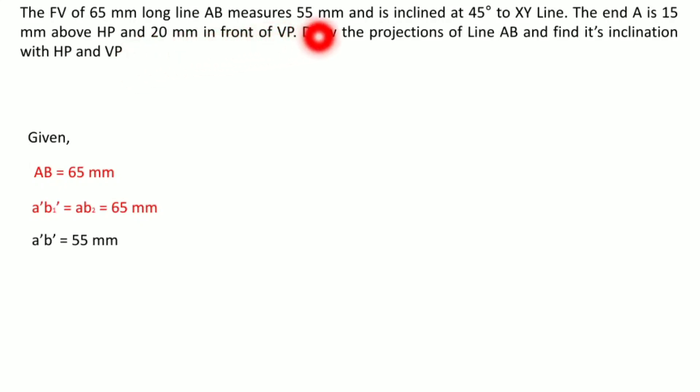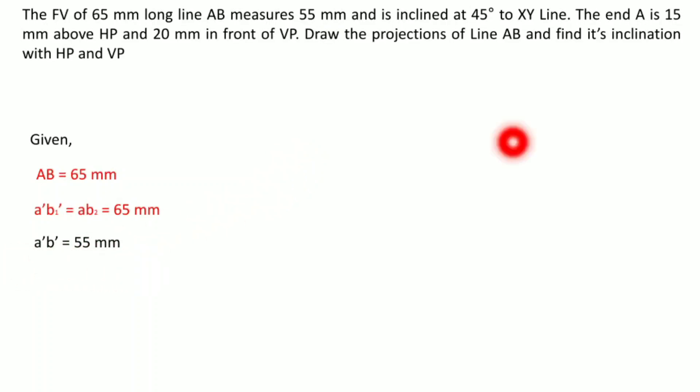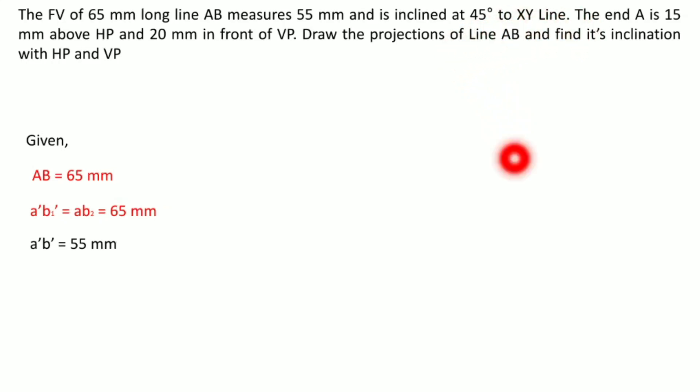Similarly, FV of the line is given as 55 mm, it means A'B' is 55 mm. And this 55 mm is inclined at an angle of 45 degrees to XY line. So this is angle alpha that is made by A'B' with XY line.